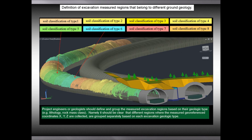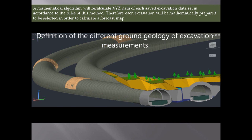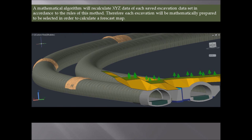Now we examine how we define and group the excavation regions belonging to different ground geology. Project engineers or geologists should define and group the measured excavation regions based on their geologic type — for example, lithology and rock mass class. Different regions where the measured georeferenced coordinates X, Y, and Z are collected are grouped separately based on each excavation geologic type. In this example, different colors represent different soil classifications. A mathematical algorithm then recalculates X, Y, and Z data of each saved excavation data set, mathematically preparing each excavation to be selected for forecasting maps.